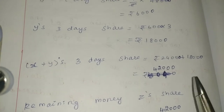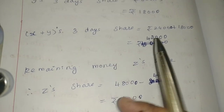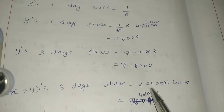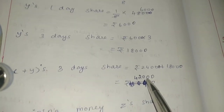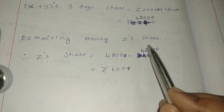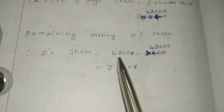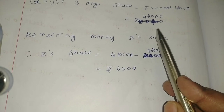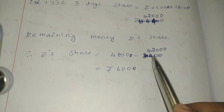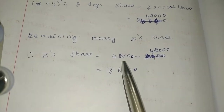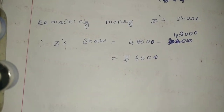Now add X and Y's 3 days share: 24,000 plus 18,000 equals 42,000. The remaining money is Z's share. Total is Rs.48,000 minus X and Y's share of Rs.42,000. So 48,000 minus 42,000 equals Rs.6,000. Z's share is Rs.6,000. Thank you.